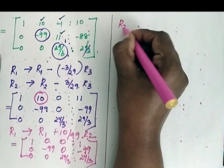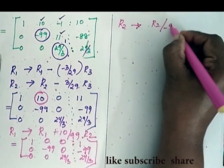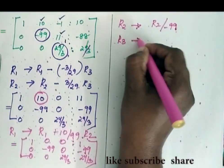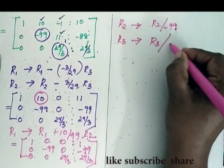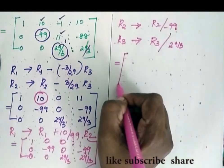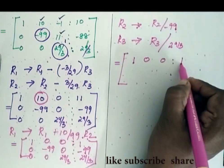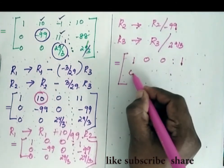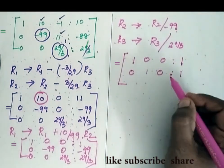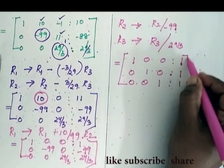Now my R2 is R2 by minus 99. My R3 is R3 by 29 by 3. So now I will have the matrix as first row no change. It is 1. Second row it is 0, 1, 0 and here you will be getting 1. Third row it is 0, 0, 1 and here again it is 1.